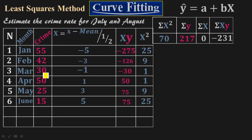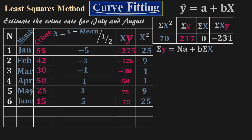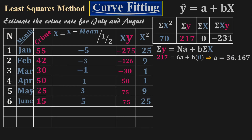Sigma Y — the summation of all crime values — equals 217. Sigma Capital X equals 0; adding all Capital X values must give 0. Sigma Capital X times Y equals −231. From the formula σY = nA + B·σX: plugging in 217 = 6A + B×0, so B×0 = 0, giving A = 217 / 6 = 36.167.